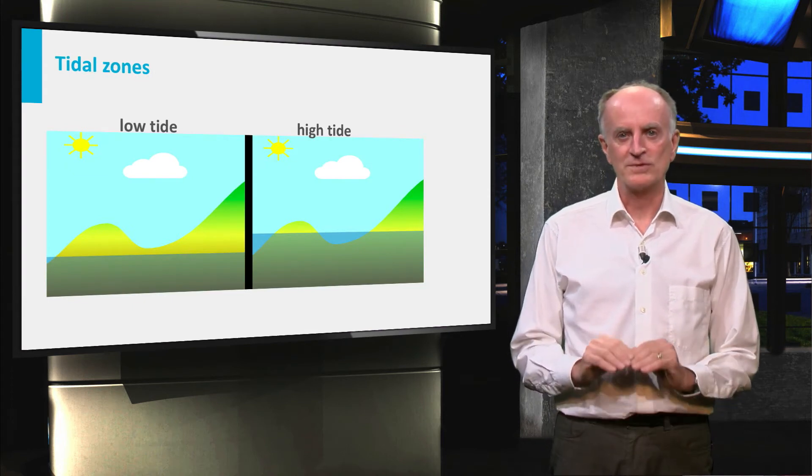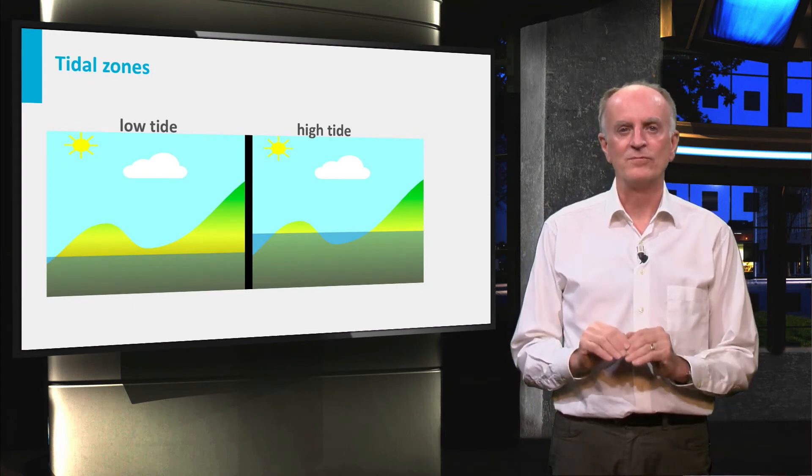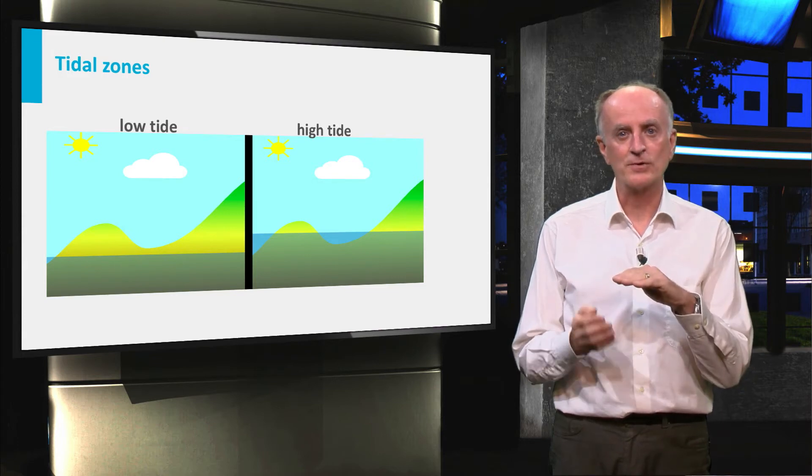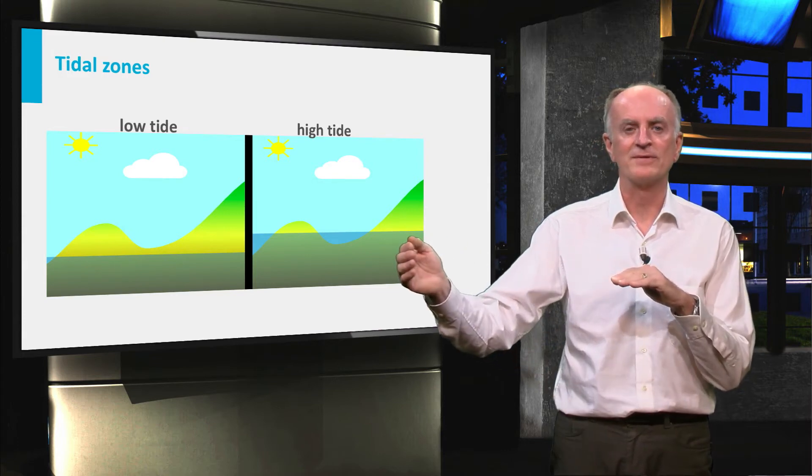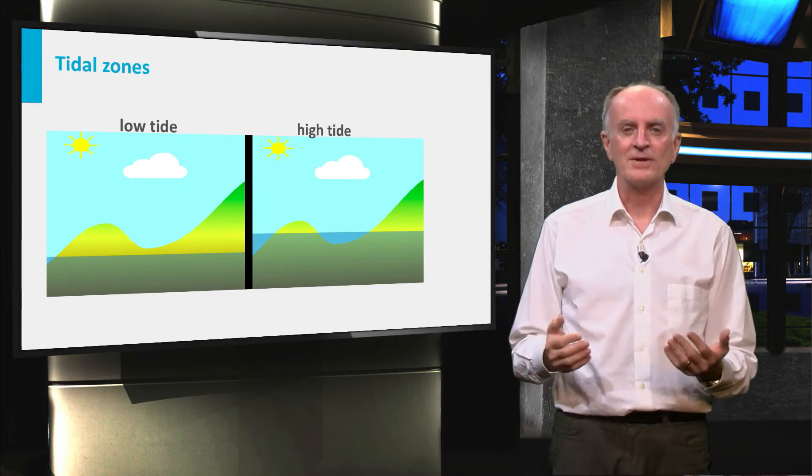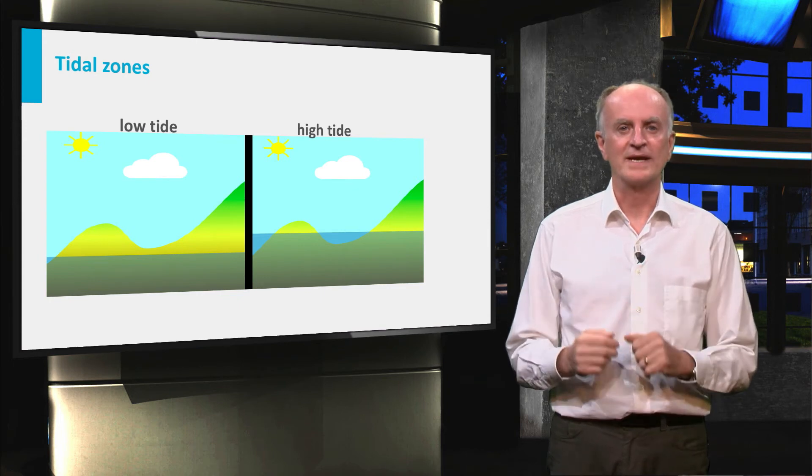Tides result in major horizontal and vertical movements of water. In shallow water, a small increase in sea level corresponds to a large displacement of the coastline. Consequently, large domains are regularly, twice a day, flooded and emerge again.